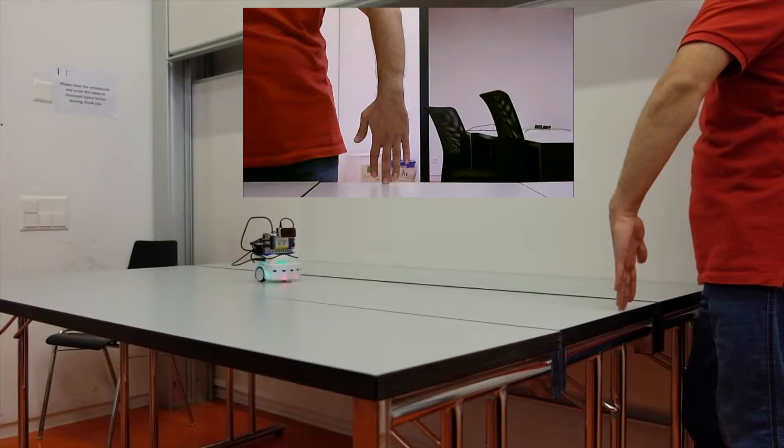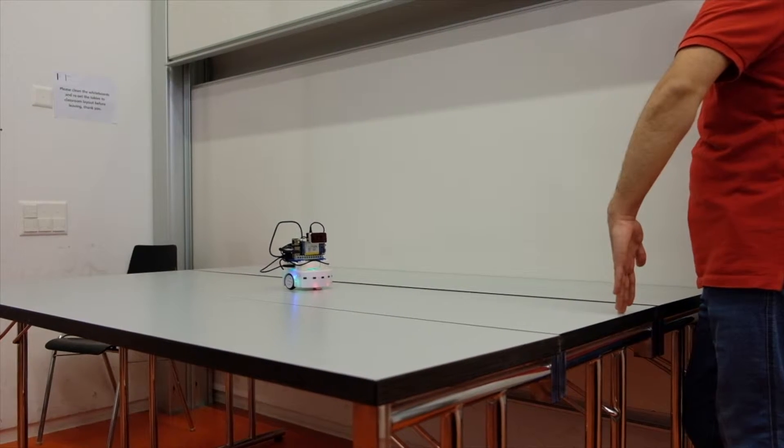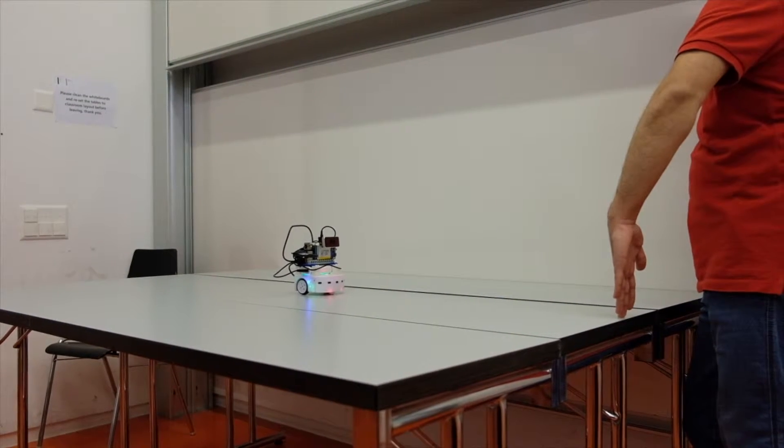When the person's hand does not move, ideally the robot will proceed in a straight line and stop when it's at a certain distance to the hand.